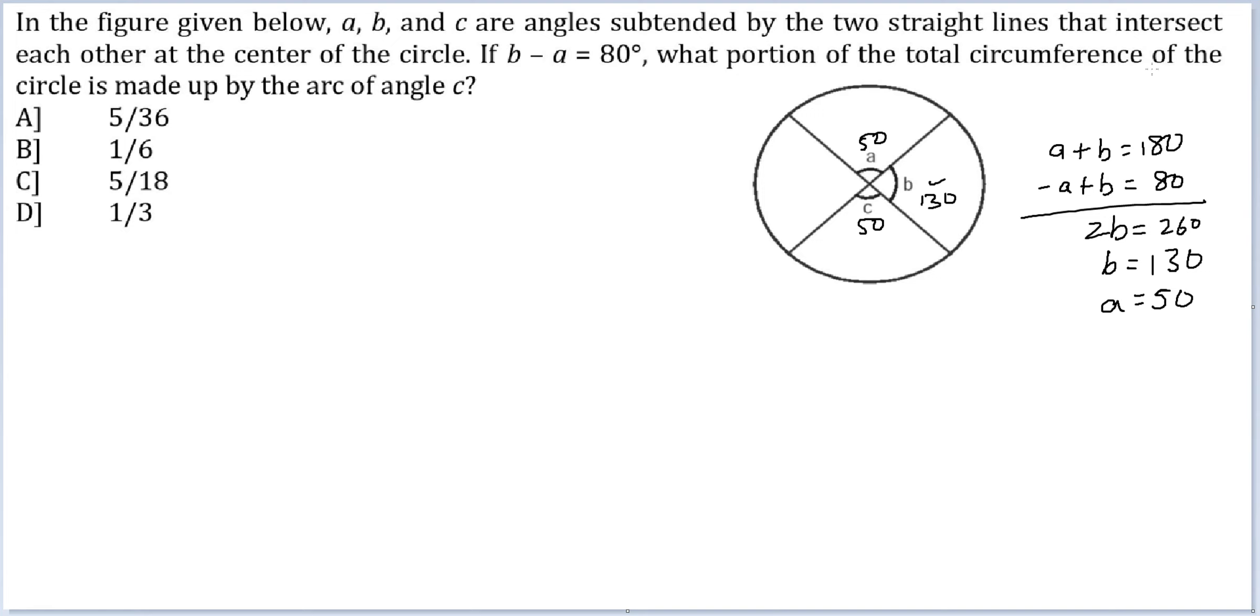Then what portion of the total circumference of the circle is made up by the arc of angle c? Because the central angle is 50, the portion will be 50 by 360.